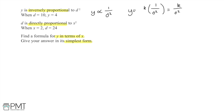For the second relationship, d is directly proportional to x squared, so I can rewrite that as d equals some other constant — which I'll call capital K this time — multiplied by x squared. These two constants are different: lowercase k and capital K are both constants, but they're different because we're working with different equations.